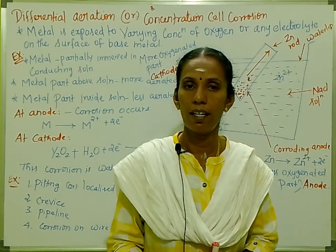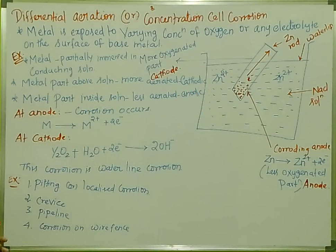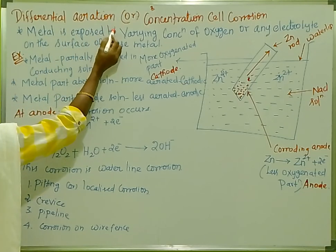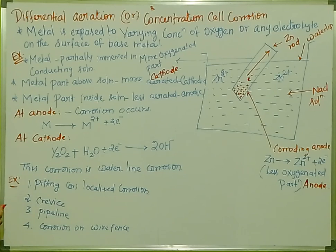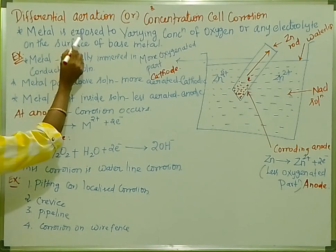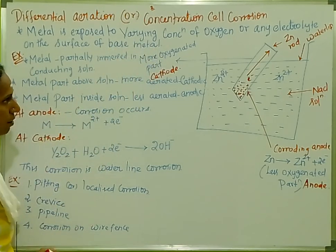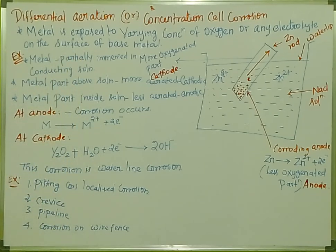Differential aeration, or concentration cell corrosion. First, we will talk about the definition. Metal is exposed to varying concentrations of oxygen or any electrolyte on the surface of the base metal.